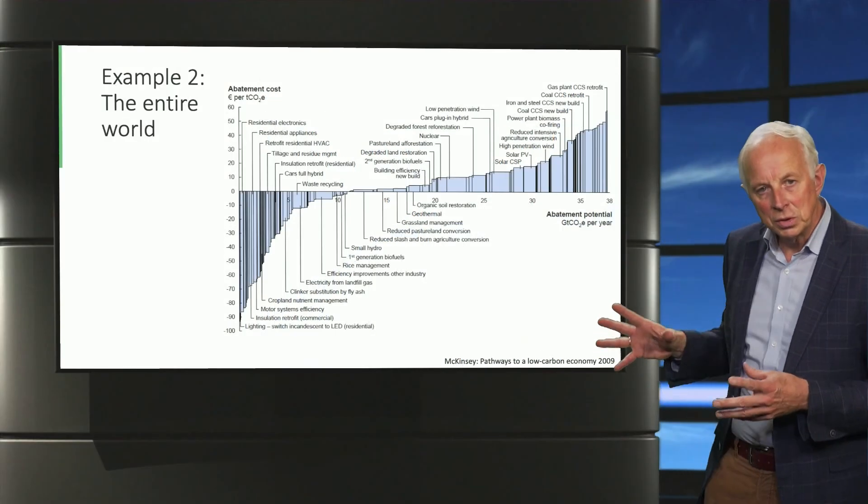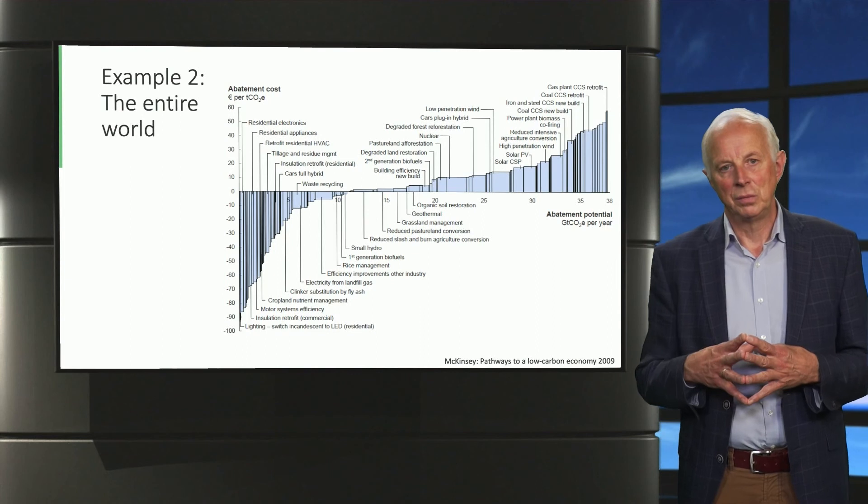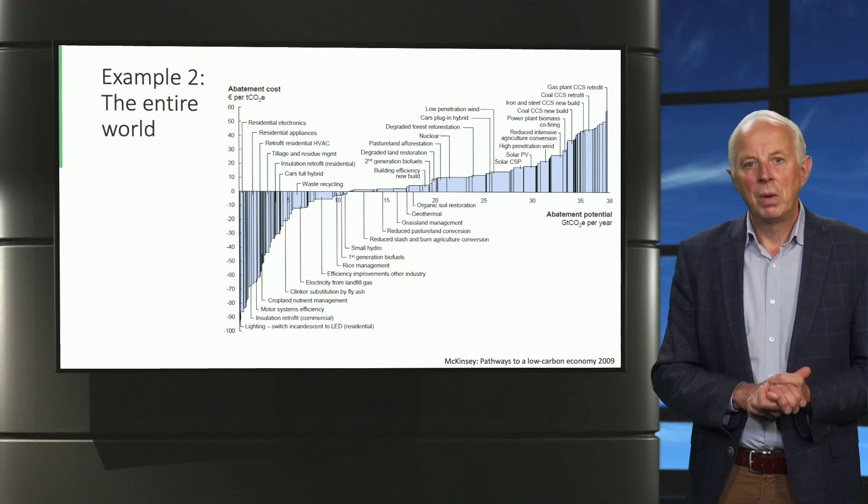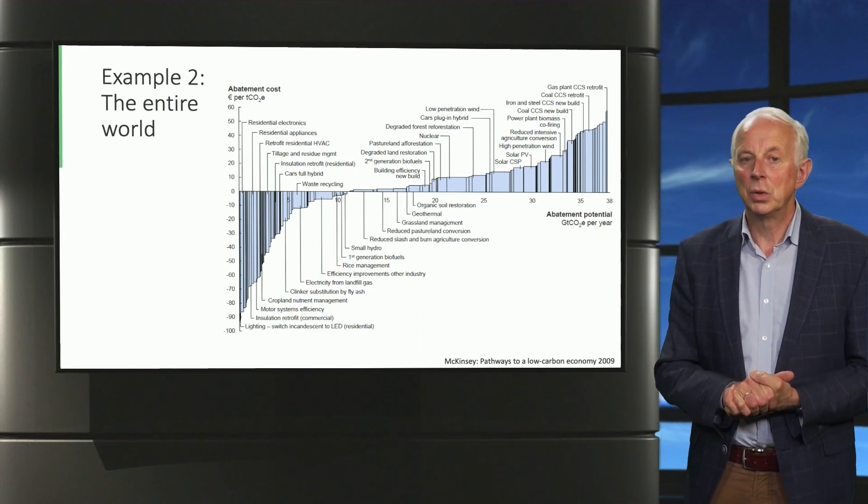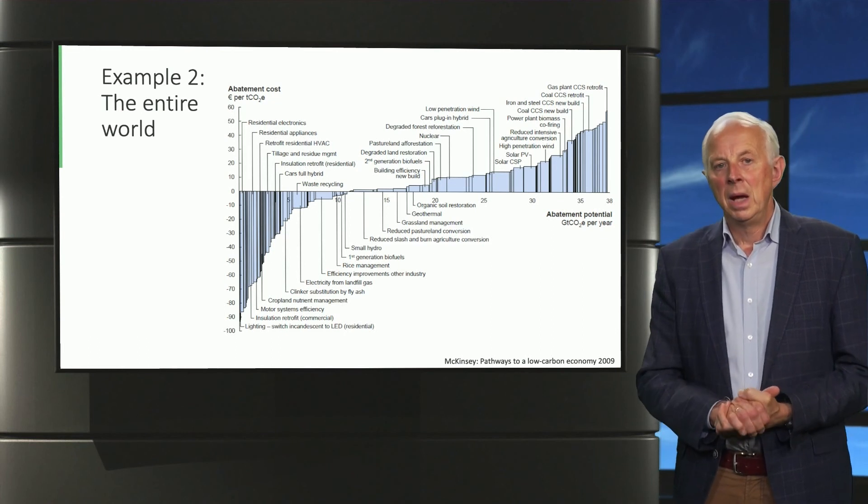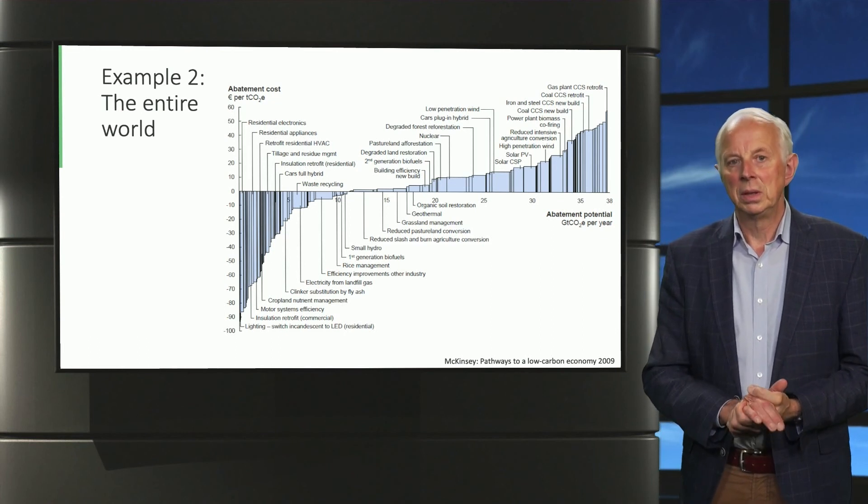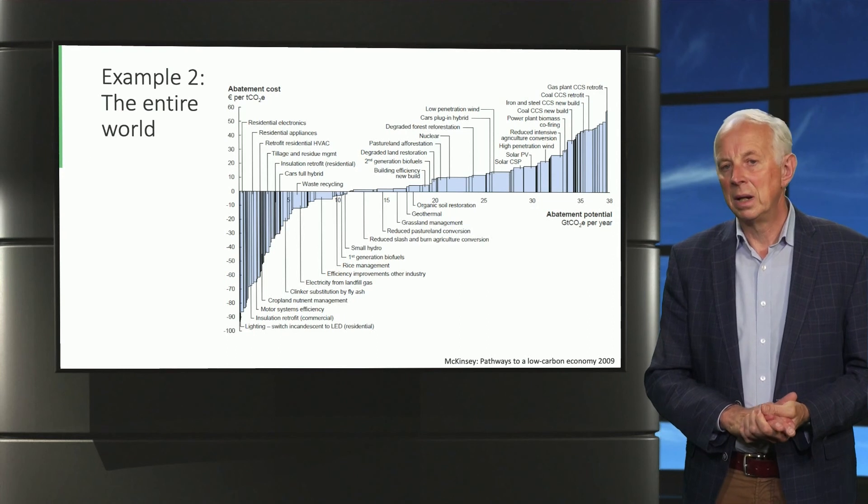You also see options gradually becoming more expensive. Some options require more cost, for example, nuclear energy and solar PV. At the time this curve was constructed, the latter technology was still relatively expensive.